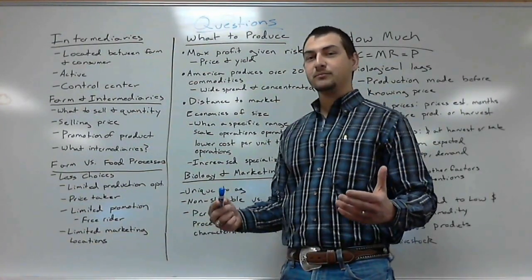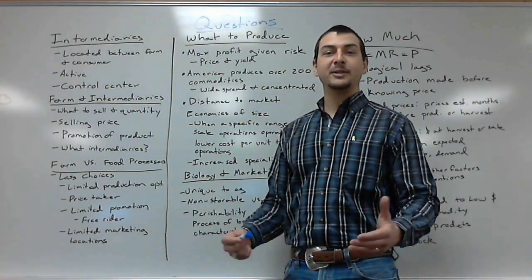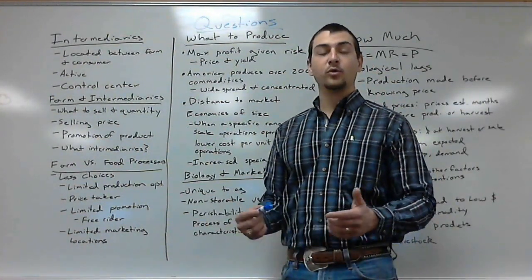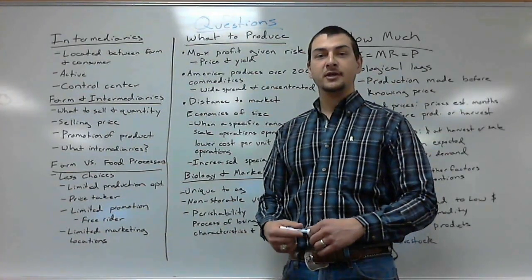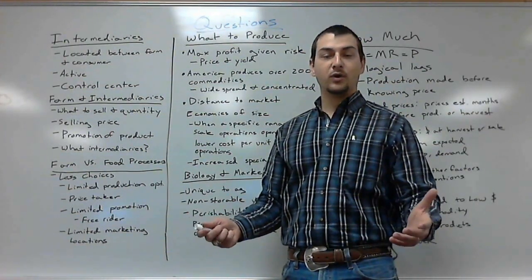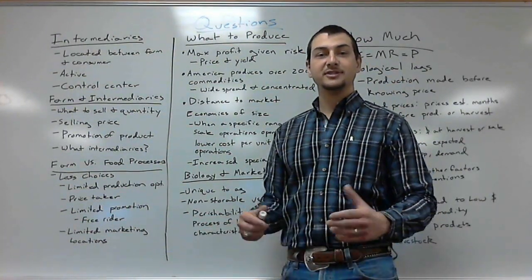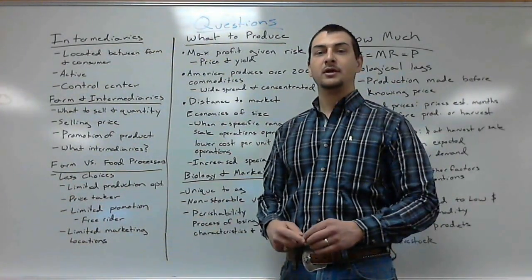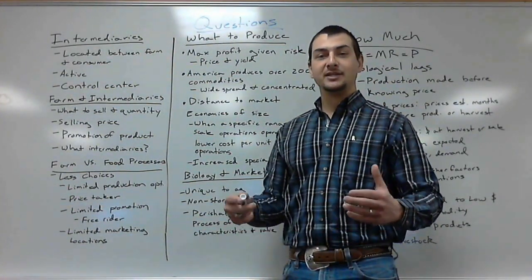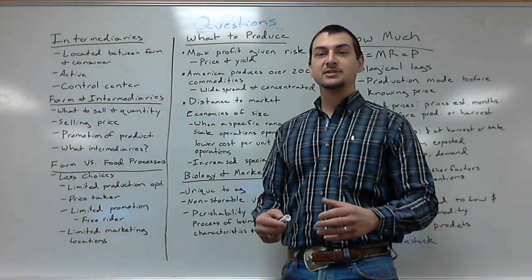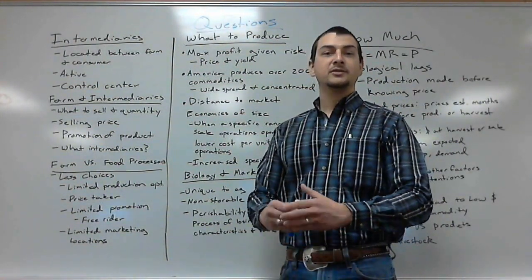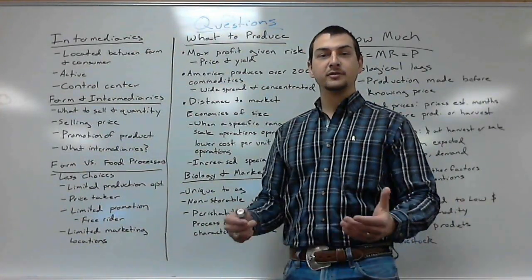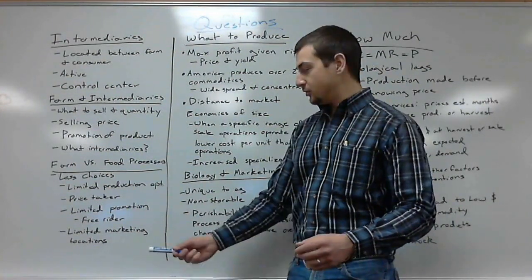There are also often limiting market locations. There are only so many places a farmer or rancher can sell their goods. If you're a rancher here in Wyoming, there are only two to three auction barns you can logically sell your animals to. Versus if you had a differentiated product, you could sell it to virtually any convenience store or grocery store throughout the whole United States. So when you're a farmer, you're often limited on where you can actually sell your good.